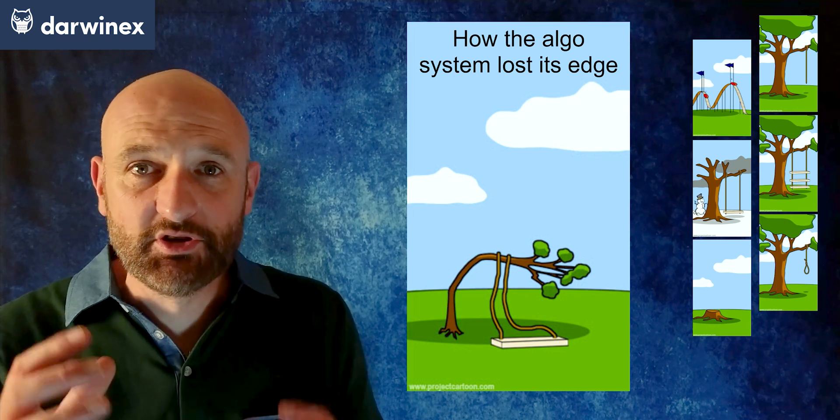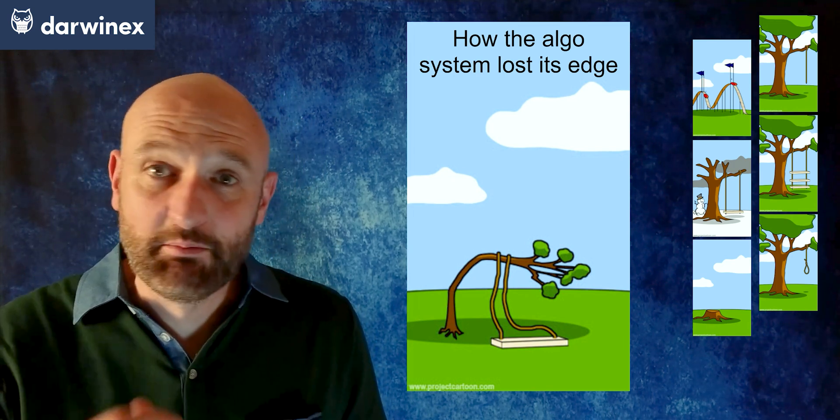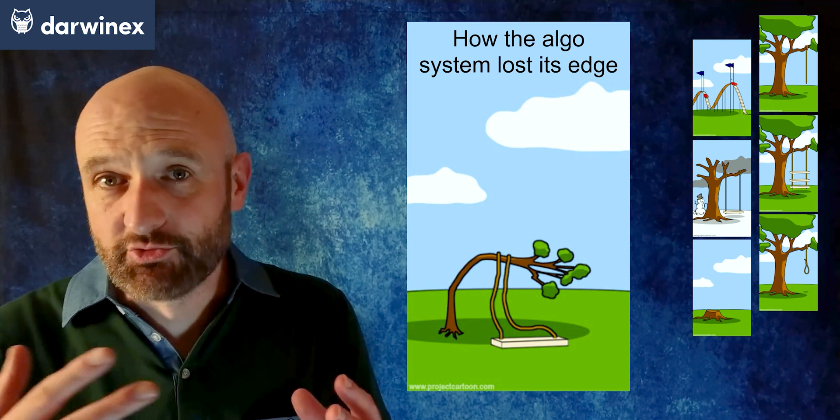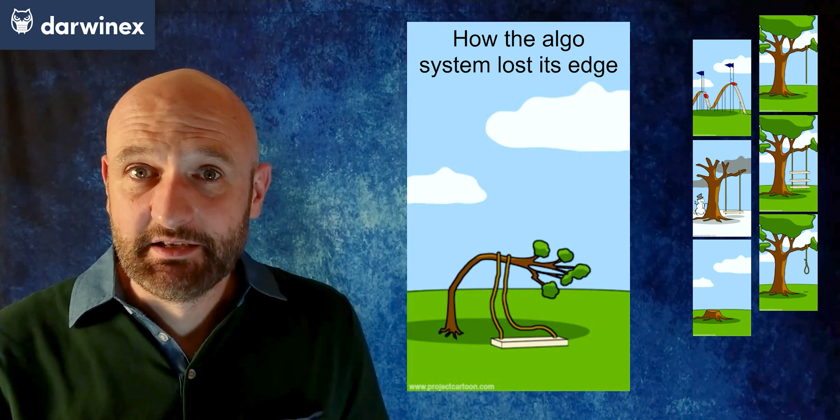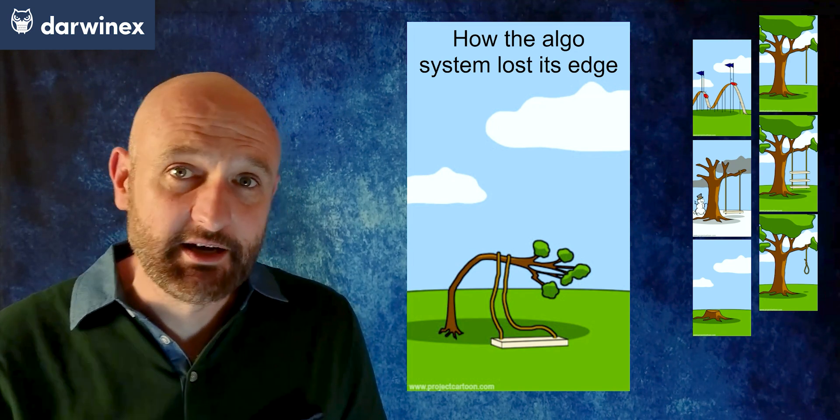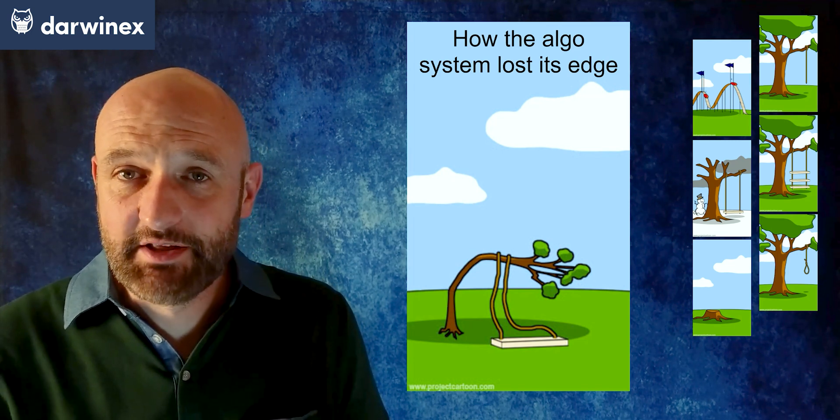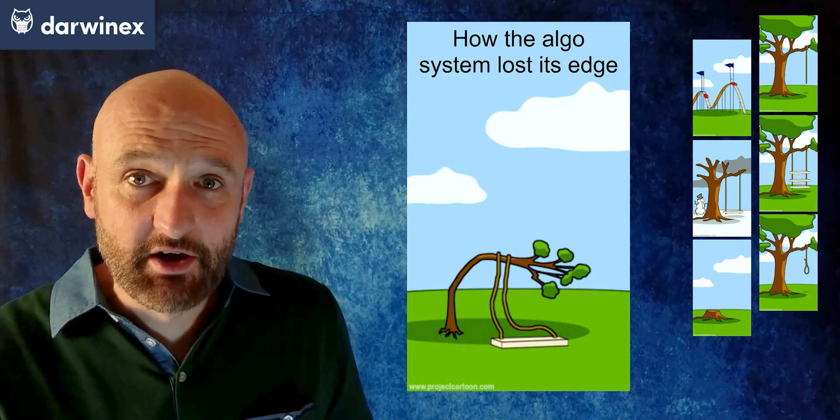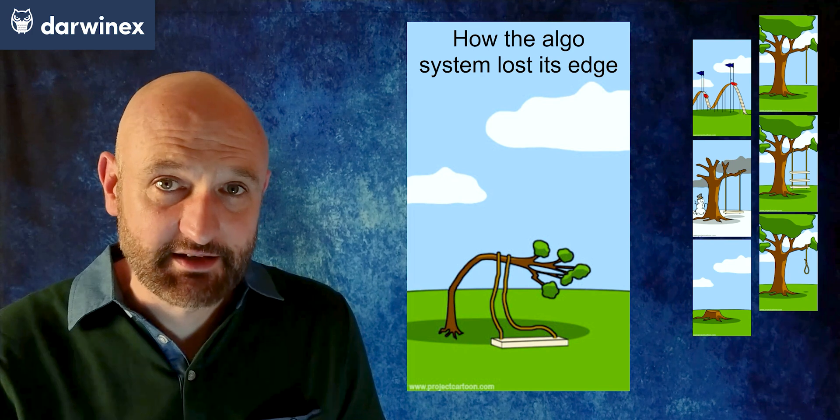As soon as I see results that are not characteristic of the behaviour I expect from backtesting and from previous performance, so bigger drawdowns, lower return than I would have expected, then I'll know that it's probably time. And this isn't as often as you'd think. Sometimes this can be every three or four years or for some of my systems maybe every year. I certainly wouldn't be re-optimizing any more frequently than that.